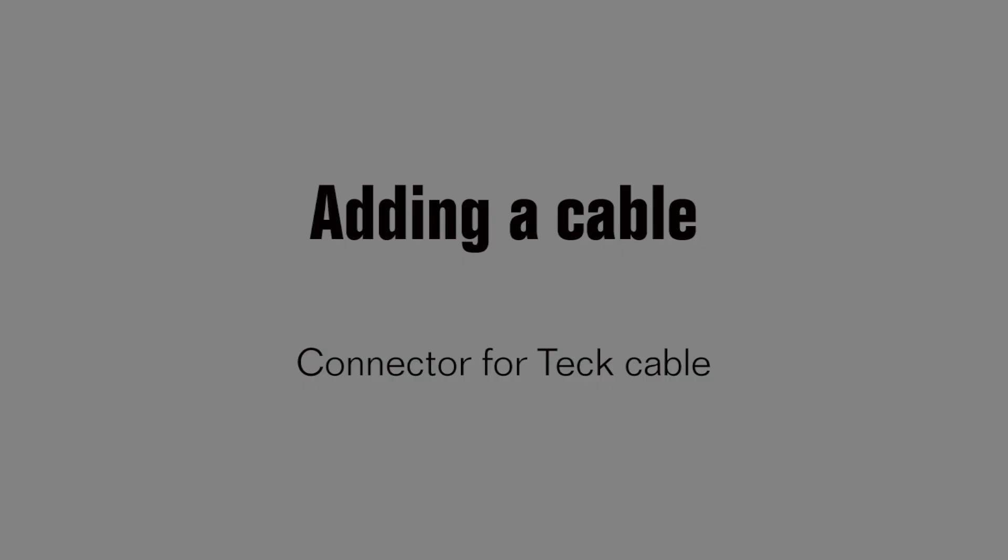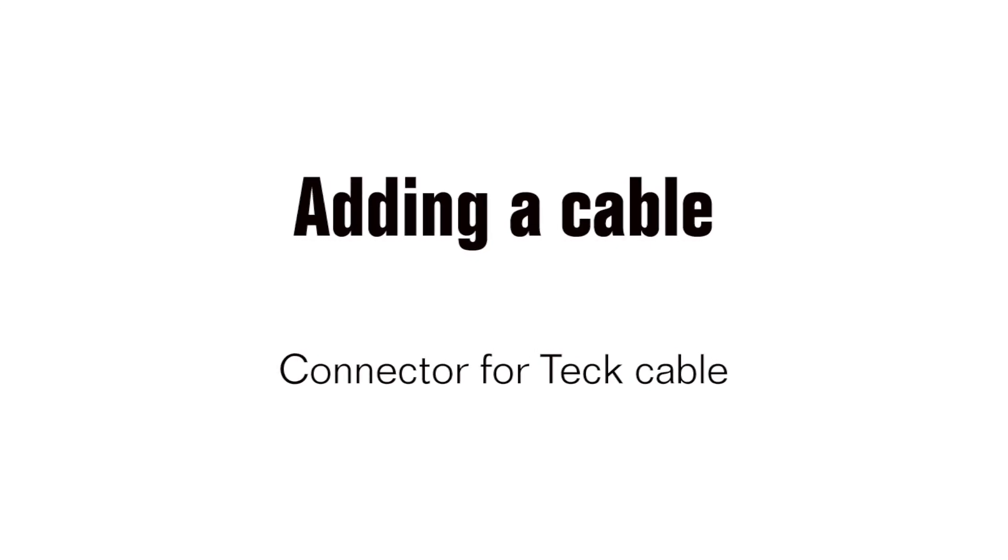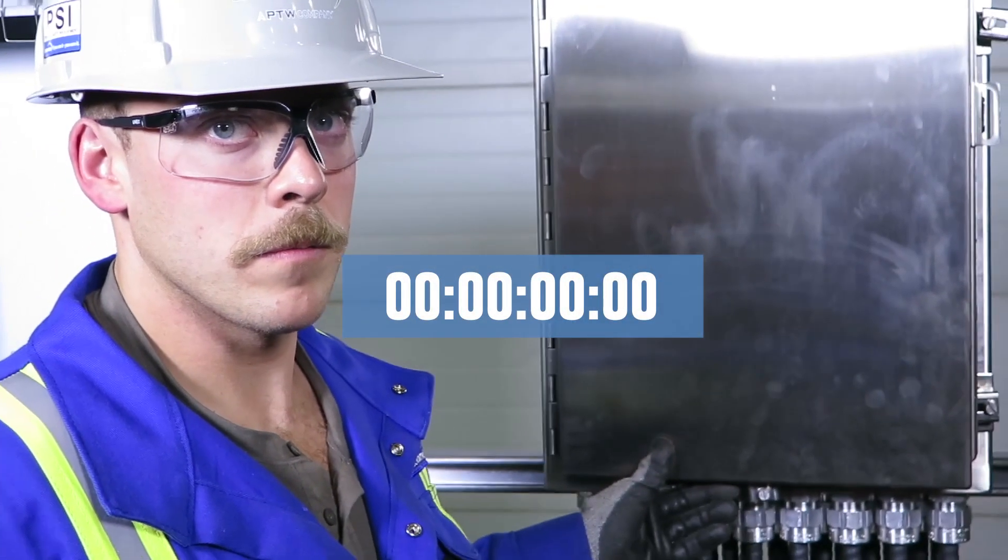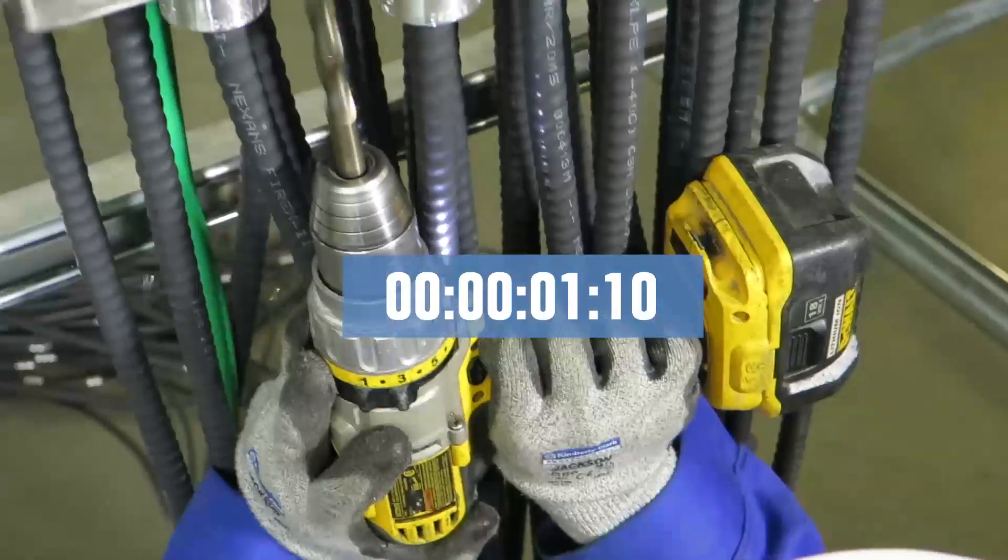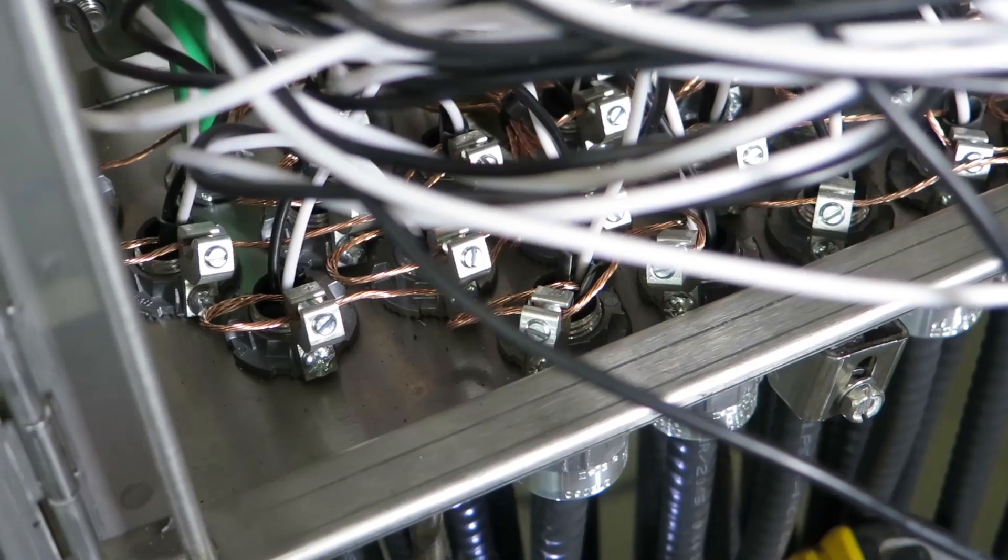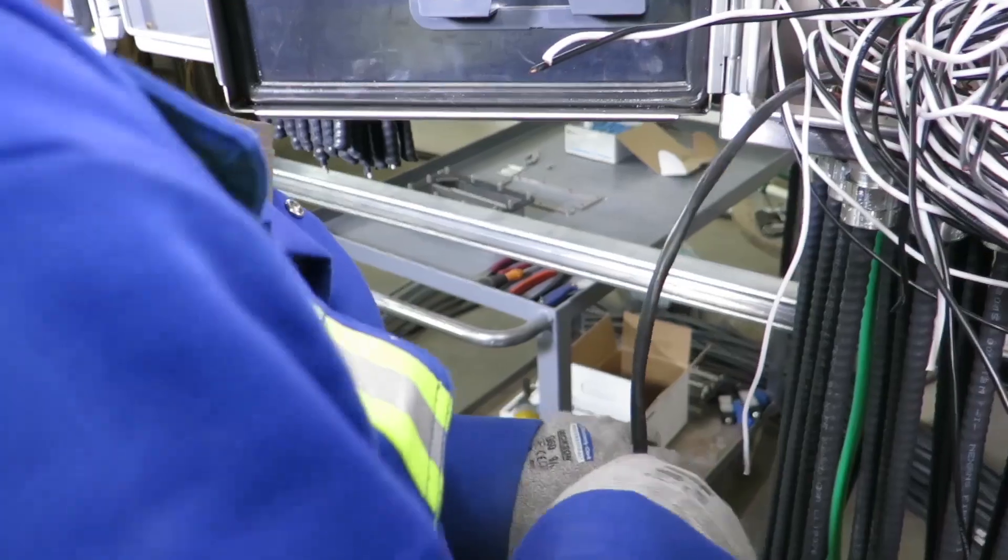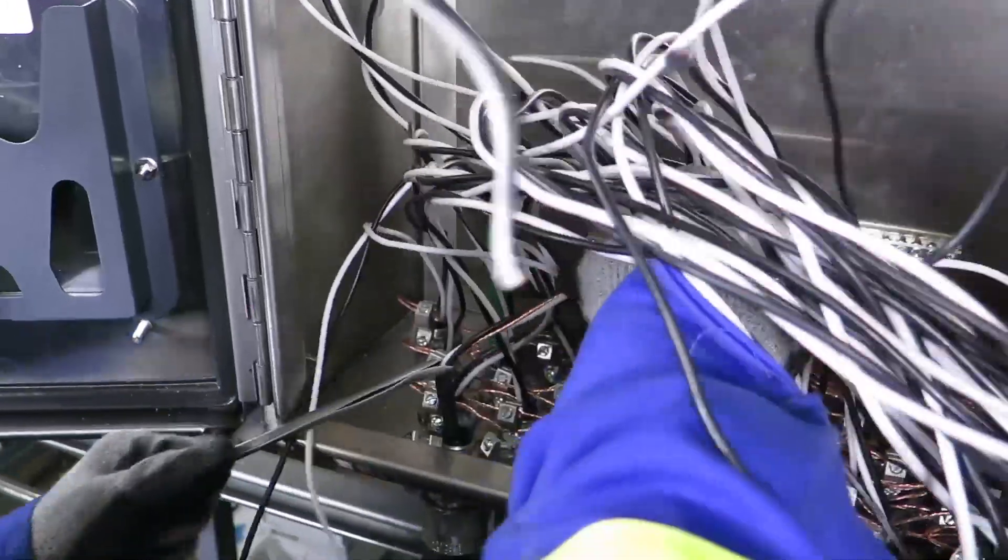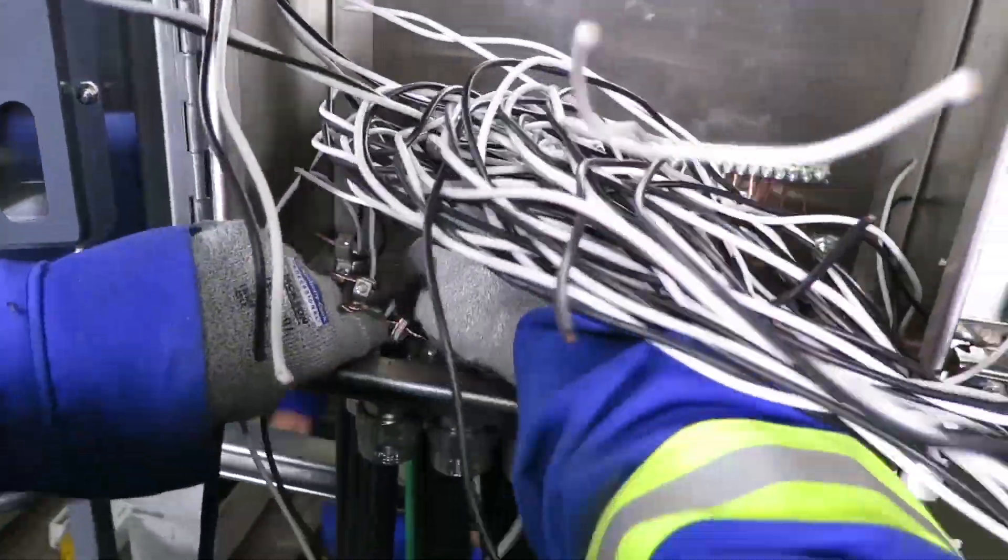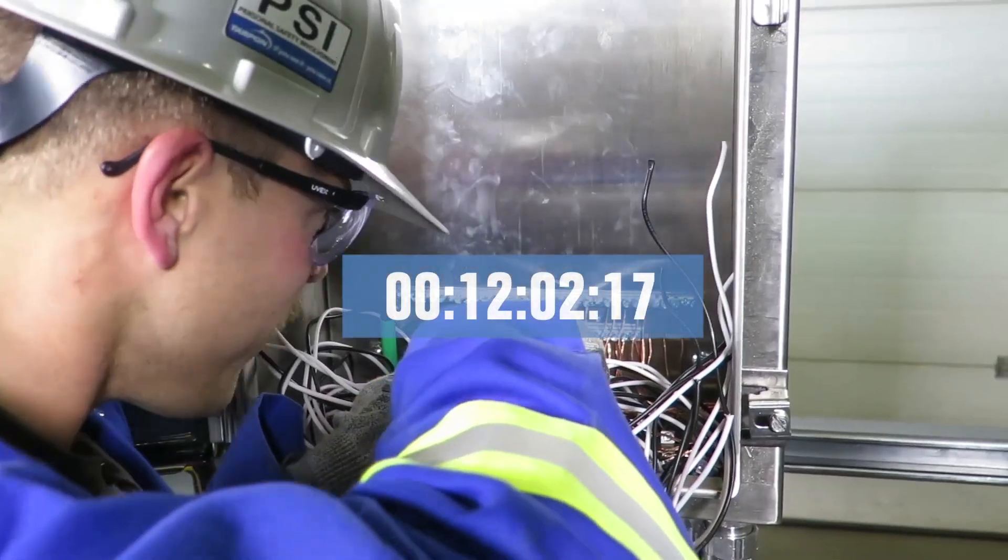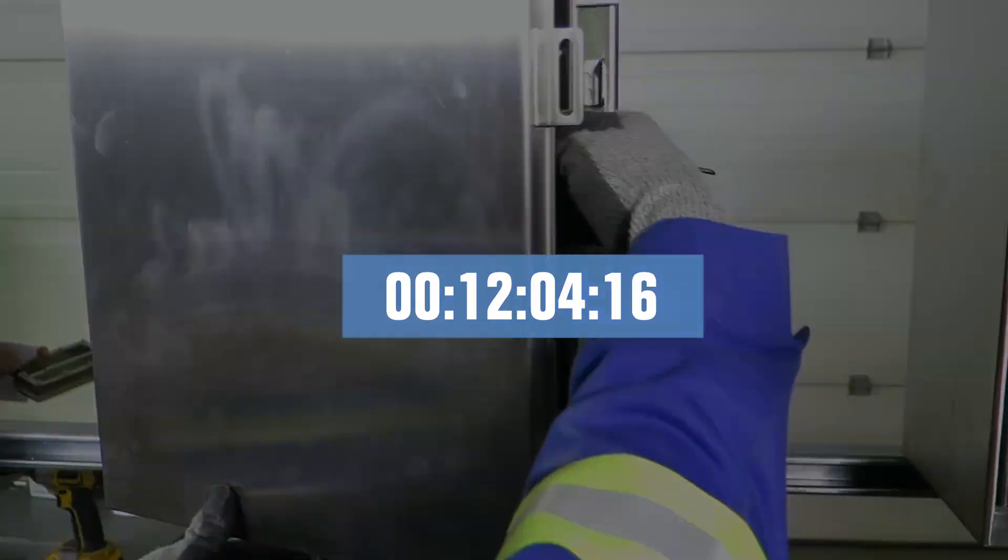Well, how about adding a cable in each enclosure? Let's just do one more quick time trial. Loren will add a cable to the stainless steel enclosure using a connector for tech cable. He drills and punches a new half-inch hole, adds the 29th connector and the cable, and starts stripping, looping, and grounding the cable. He finishes the additional installation in 12 minutes and 4 seconds.